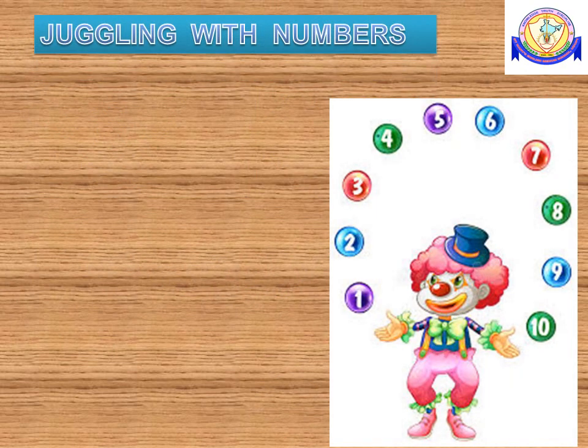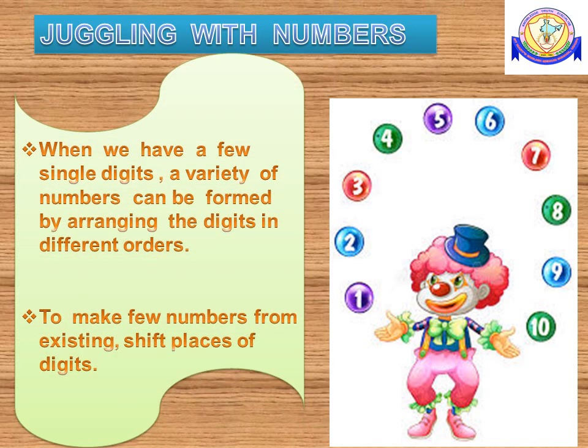Children, look at this picture. This joker is juggling with numbers from 1 to 10, that means he is throwing and catching several numbers continuously so that most are in the air all the time. We are applying the same method to explain the concept of juggling with numbers. When we have a few single digits, a variety of numbers can be formed by arranging the digits in different orders. To make new numbers from existing ones, shift the places of digits.